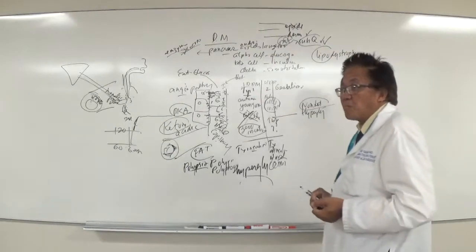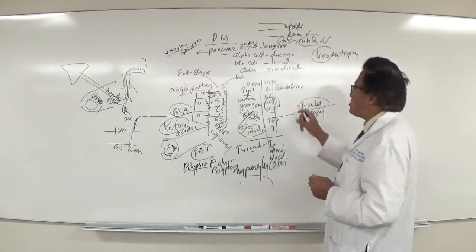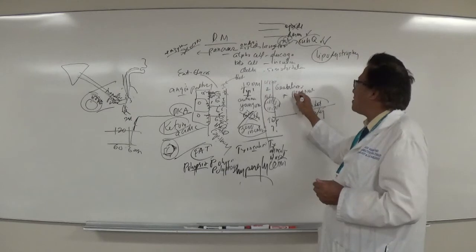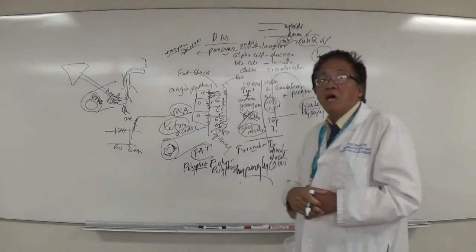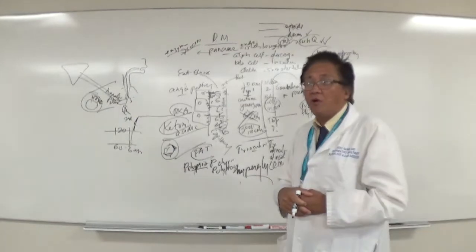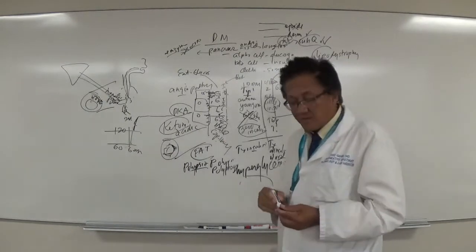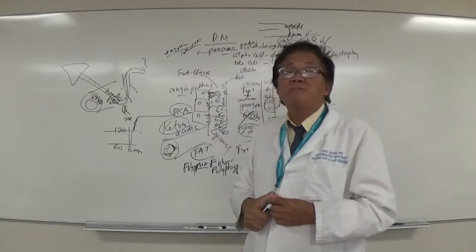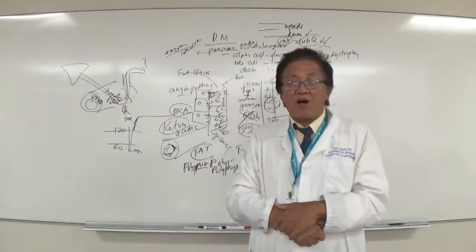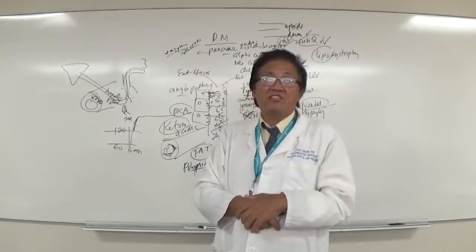Gestational diabetes occurs in pregnant women and can progress to type 2 diabetes over time. These women are prone to delivering large for gestational age (LGA) babies — weighing 9 to 10 pounds — because excess maternal blood glucose crosses the placenta and causes fetal overgrowth.